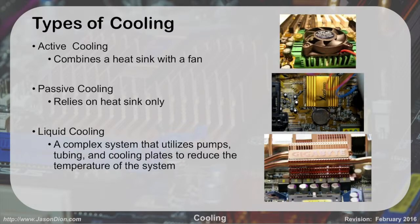We have three main types of cooling. We have active cooling where we combine the heat sink with a fan. We have passive cooling where we rely on the heat sink only. Or we have a complex system called liquid cooling that utilizes pumps, tubing, and cooling plates to reduce the temperature of the system. We have three examples here: on the top we have active, in the middle we have passive, and on the bottom we have an example of a liquid cooled system.